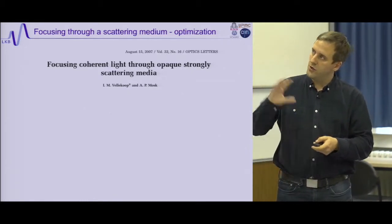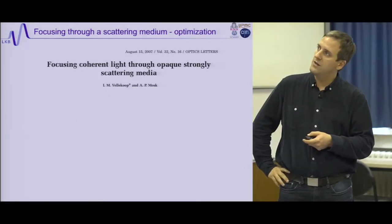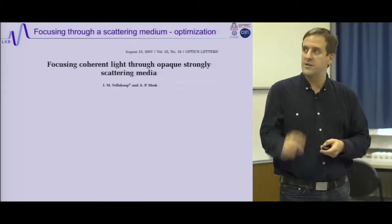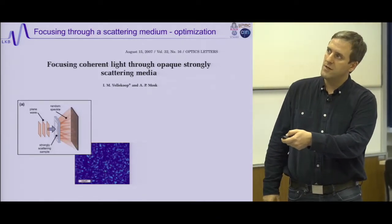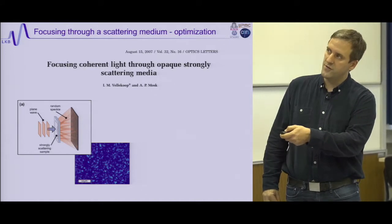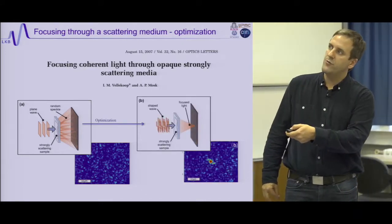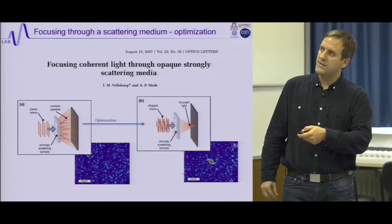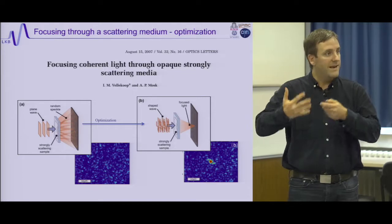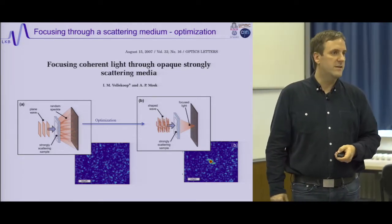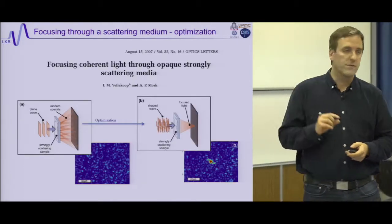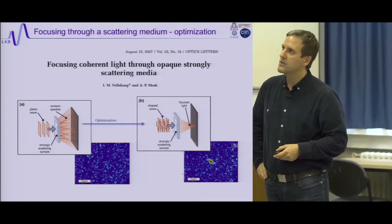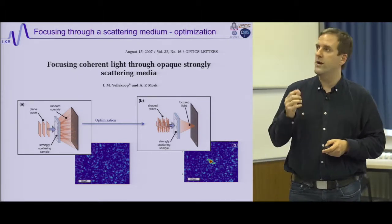There was also another approach that appeared at the same time, from the group of Allard Mosk, with a different strategy: focusing light through a scattering medium without a source — just a detector. You shine a plane wave on the scattering medium, record a typical speckle pattern on your camera, and then optimize the wavefront blindly to maximize the intensity at a chosen point.